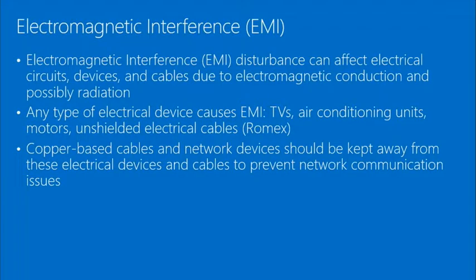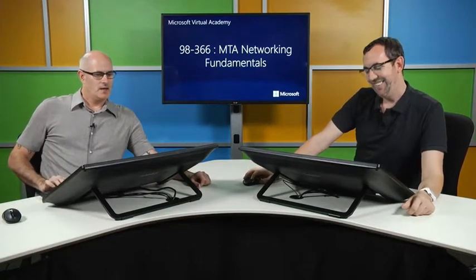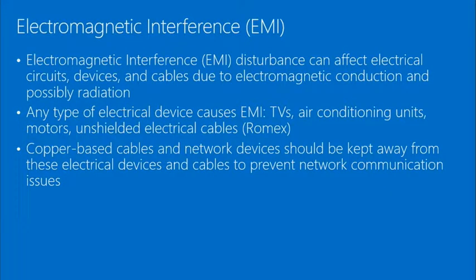EMI — electromagnetic interference — is a disturbance that can affect electrical circuits, devices, and cables due to electromagnetic conduction and possibly radiation. Any type of electrical device can create EMI: TVs, air conditioning units, motors, unshielded electrical cabling. A real example: cordless phones operating at 2.4 GHz would cause interference with wireless networks in a home because they were on the same channel, killing the wireless signal when the phone was used.